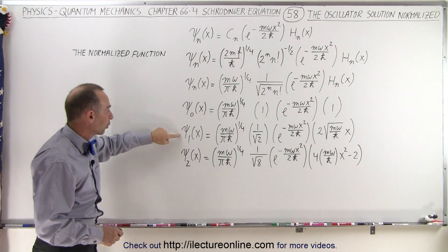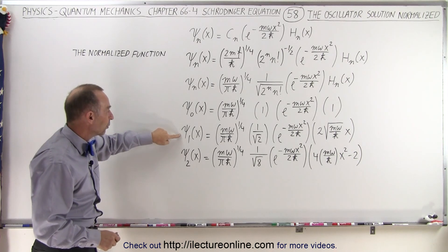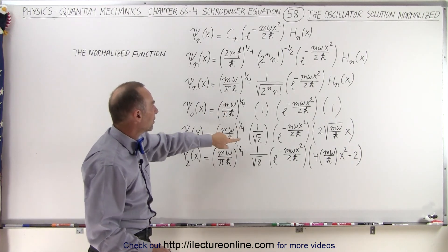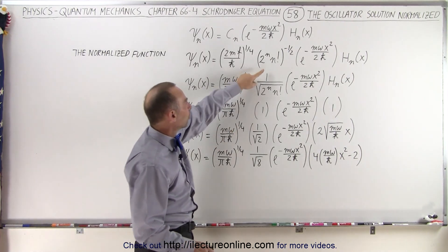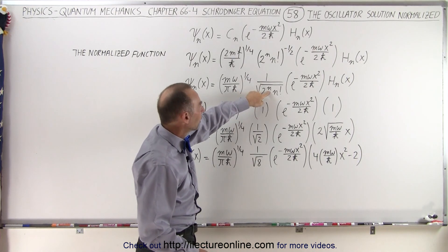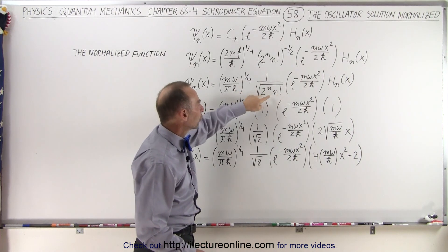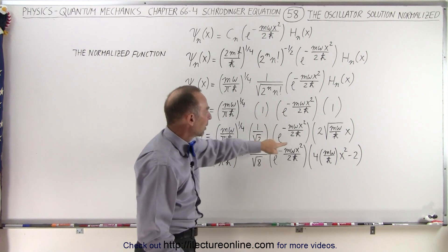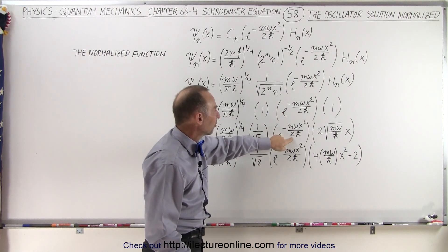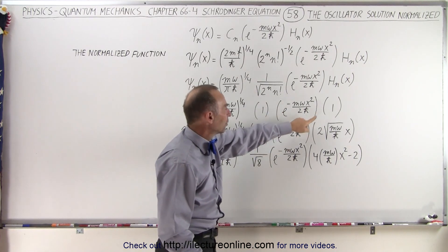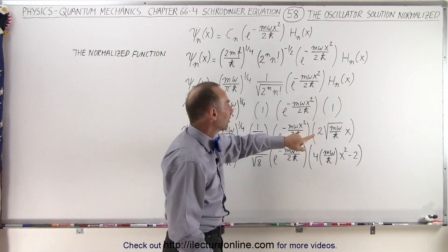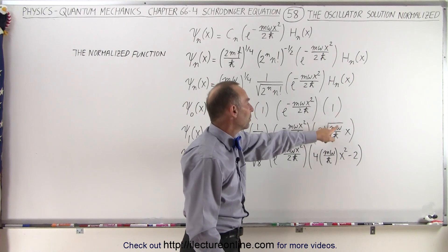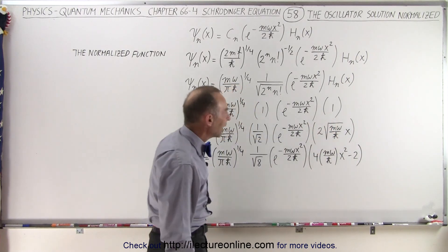For the quantum state n equals 1, the leading part still stays the same, but now we have 1 over 2 to the first power times 1 factorial, so that would be 1 over the square root of 2. The exponential function stays the same, and the Hermitian operator now becomes 2x times the square root of m omega over h-bar.